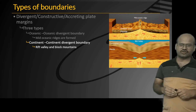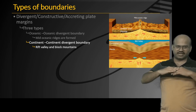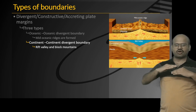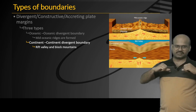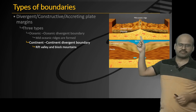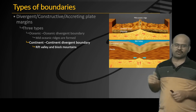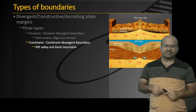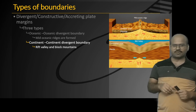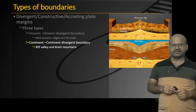Next is the continent-continent divergent boundary, where a continental plate is divided into two parts and they move away from each other, forming rift valleys and block mountains. Sometimes volcanism also occurs here, as we can see with the East African Rift Valley.